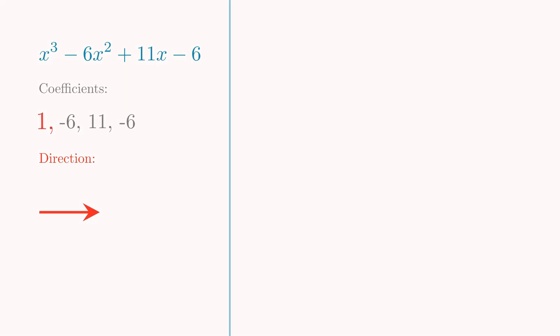First coefficient is 1. Draw a line segment with length 1, in the current direction. The next coefficient is minus 6. The direction is now upwards, but since the coefficient is negative, we draw the line going down from the previous one. We keep going, changing the direction each time, until we finish drawing the line corresponding to the final coefficient, in this case, minus 6.